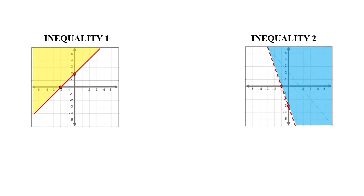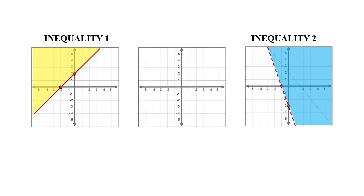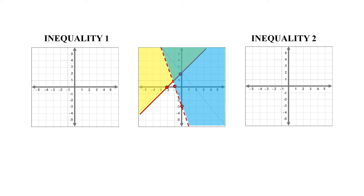For example, we have these two graphs from a system of linear inequality. To know their solution, we have to combine these two graphs into one Cartesian plane. As you can see, they overlap in this area. It means that any point on this area is their solution.